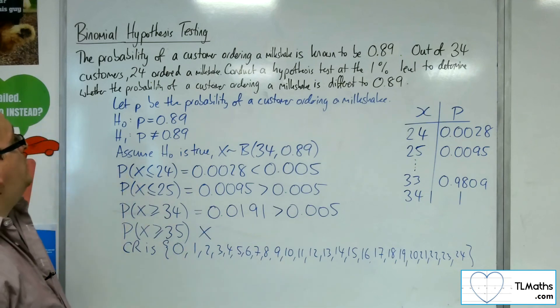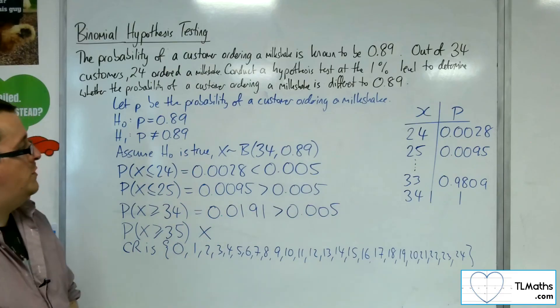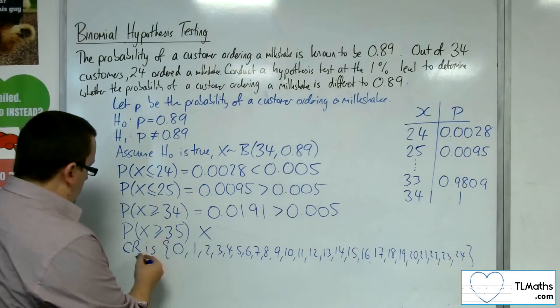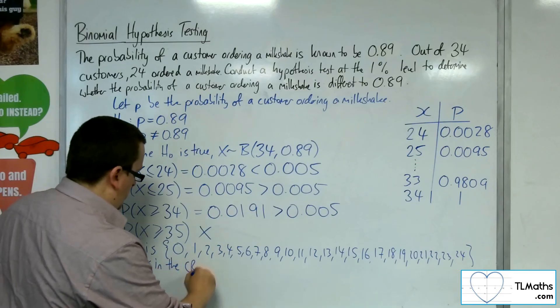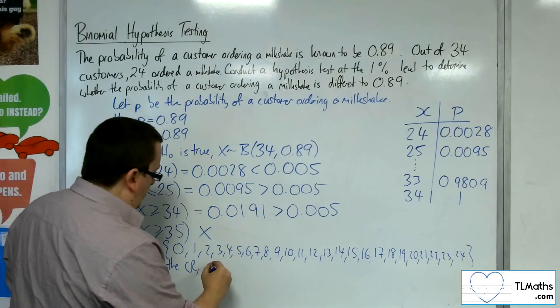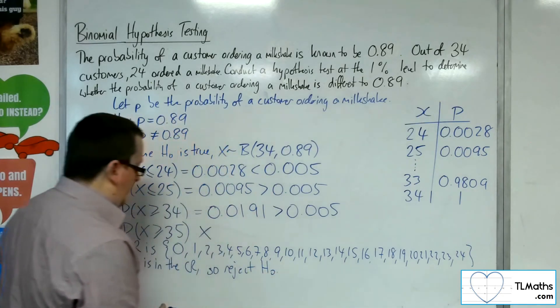And what did we find? 24 ordered a milkshake. 24 is in the critical region. So the result is significant. So we reject the null hypothesis.